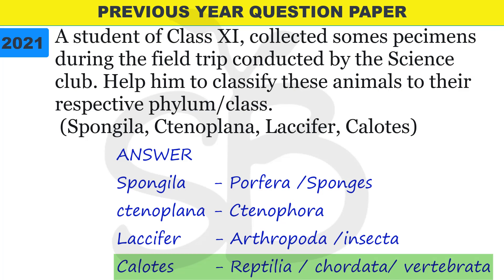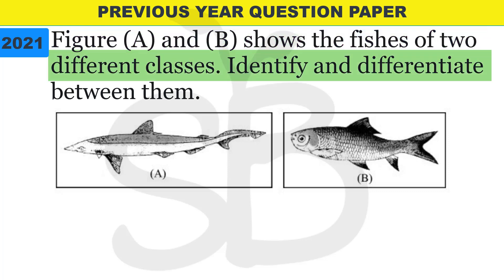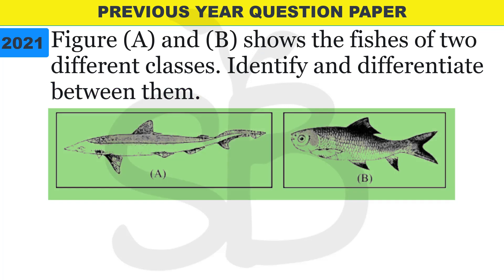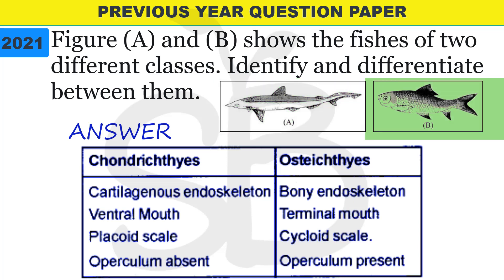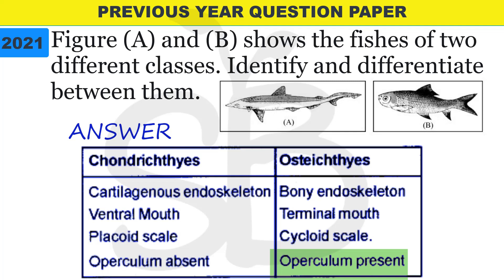Next question from 2021: figure A and B shows fishes of two different classes. Differentiate them. Class Chondrichthyes has a cartilaginous skeleton, ventral mouth, placoid scales, and operculum absent. Class Osteichthyes has a bony endoskeleton, terminal mouth, cycloid scales, and operculum present.